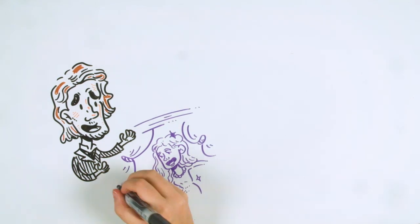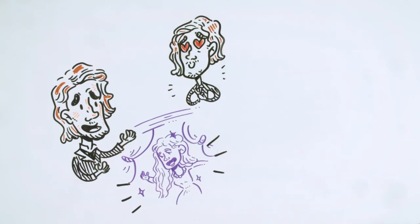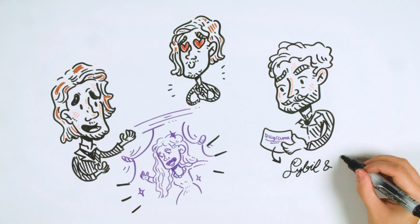But Dorian says Sybil is the best actress he has ever seen, and Lord Henry decides to accompany him to see her act. That night, after dinner, Lord Henry discovers a telegram from Dorian announcing his marriage to Sybil.